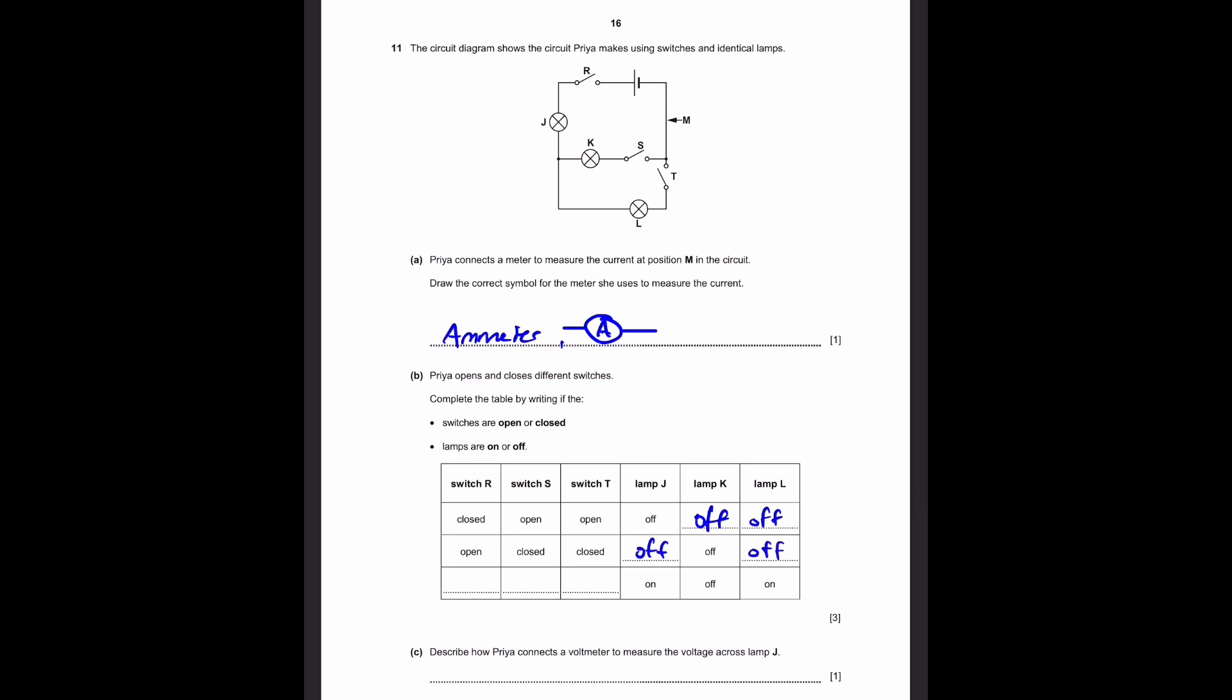Now for the third one, we know the states of the lamps. Lamp J is on, L is on, and K is off. So if at least one of the lamps is on, switch R has to be closed, otherwise none of them will be on. And now what about switch S and T? Well, the current goes through J and then splits into two parts. So K, the lamp we know is off, and therefore switch S has to be open. Only then K will be off and it won't be brightened. But switch T has to be closed since lamp L is on. So this is closed and this is open.